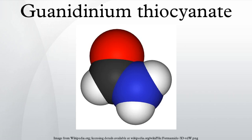Guanidinium thiocyanate is a chemical compound used as a general protein denaturant, being a chaotropic agent, although it is most commonly used in the extraction of DNA and RNA. Note, this compound may also be recognized as guanidine thiocyanate.